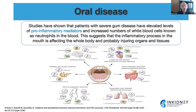We talked about oral disease in a previous video. Severe gum disease has been associated with elevated pro-inflammatory mediators and increased white blood cells in the blood, suggesting that the inflammatory process in the mouth affects the whole body. Gum disease has been associated with inflammatory processes throughout the body, and there is a link between gum disease and kidney disease.